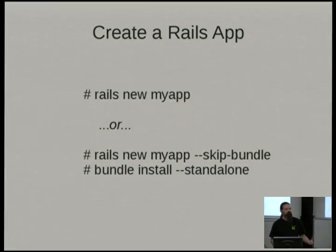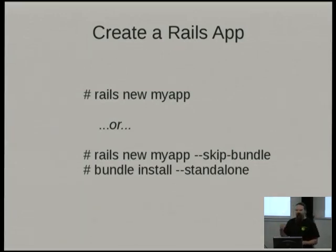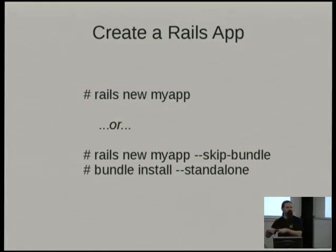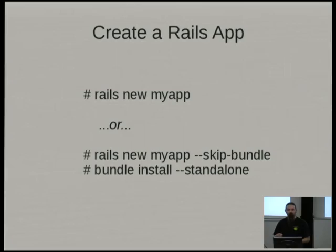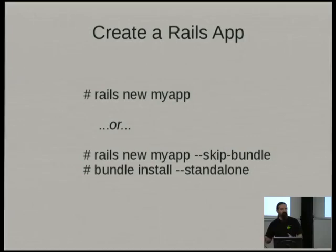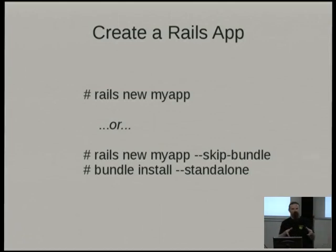To create a Rails application, from your terminal you run 'rails new myapp', which creates a skeleton application. You can start it up, point your browser at localhost, and it goes 'Rails, yay.' When you run that first command, it invokes something called Bundler to download all of your application's dependencies and install them globally on your system. Possibly you don't want to do that — you may not want to clobber whatever's already on your system. So instead you can run 'rails new myapp --skip-bundle', and then later run 'bundle install --standalone', pulling all your dependencies into a subdirectory of your application rather than clobbering the global system.